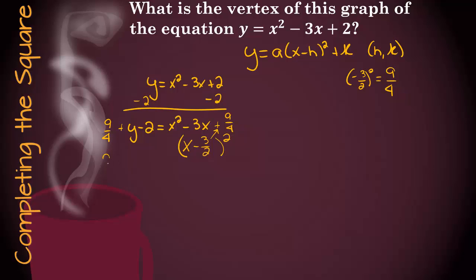So let's see what we have. We'll have 9 fourths minus 2 plus y equals x minus 3 halves squared. We'll need a common denominator here, which is 4.